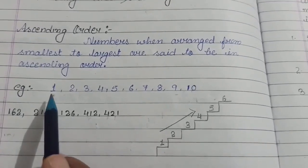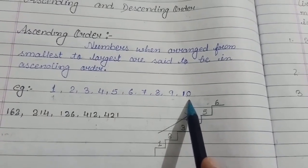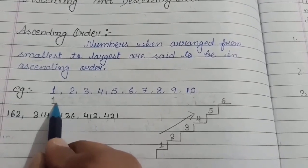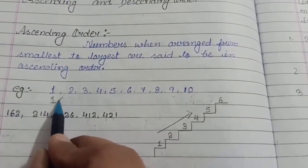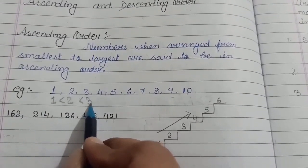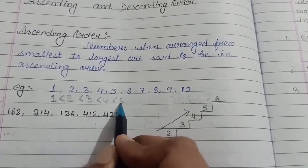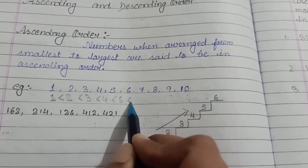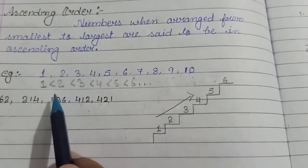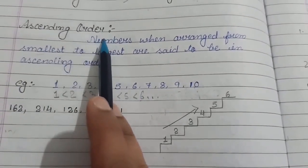You can see here 1 is the smallest number and 10 is the largest number. You can see 1 is smaller than 2 and 2 is smaller than 3, 3 is smaller than 4 and 4 is smaller than 5, 5 is smaller than 6. And this sequence is called ascending order.